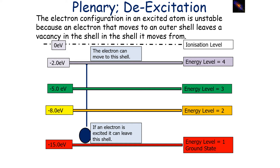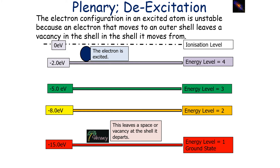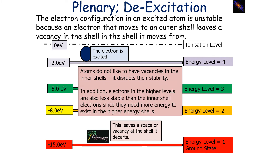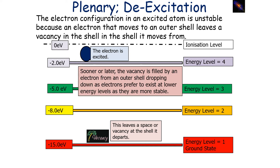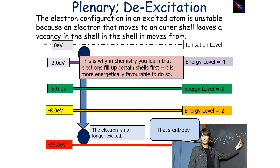The electron configuration in an excited atom is unstable because an electron moves to an upper or outer shell, leaving a vacancy in the shell it moved from. For example, if an electron in the ground state is excited, it can leave that shell and go to a higher level — say energy level 4. This leaves a vacancy at the shell it departs. Atoms don't like vacancies in their inner shells because it disrupts their stability. Electrons in higher levels are also less stable since they need more energy to exist there. Sooner or later, the vacancy is filled by an electron from an outer shell dropping down, as electrons prefer to exist at lower, more stable energy levels. Which electron does this is dependent on probability, with higher level electrons more probable to do so because they're more unstable.